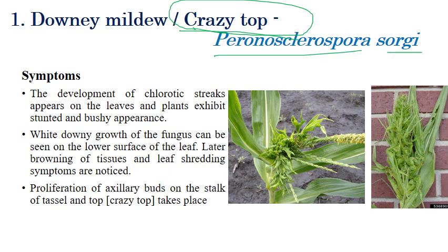Regarding symptoms, initially downy growth or stunted growth can be seen — downy growth of the fungus along with stunted growth of the plant can be observed. Later, browning of the tissues can be observed. Chlorotic streaks can be seen on the leaves. The plant exhibits stunted growth; whereas a normal maize plant can grow an average of one to one-and-a-half meters, an infected plant may grow only 20–30 centimeters.